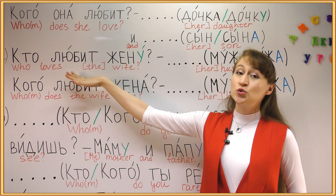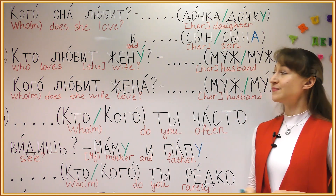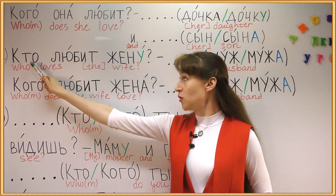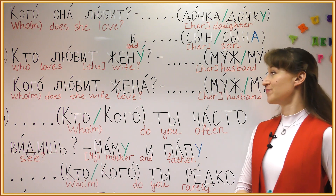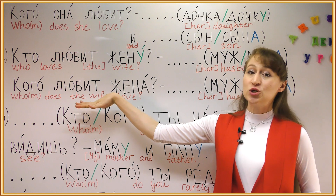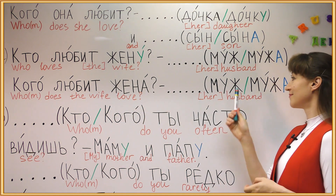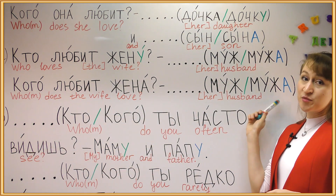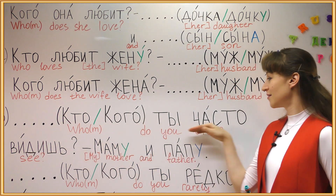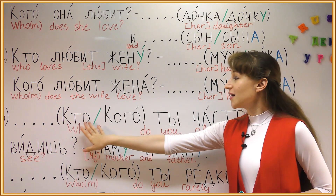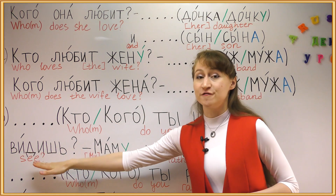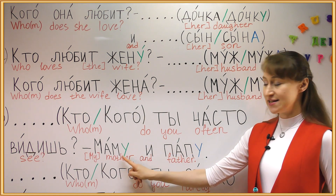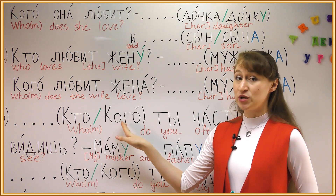Who loves the wife? The daughter and the son. Asking about the subject using КТО, choosing the subject form муж. Asking about the object — КОГО ТЫ ЧАСТО ВИДИШЬ? МАМУ И ПАПУ. Here we have object forms, У ending in both words. That is why we use КОГО.